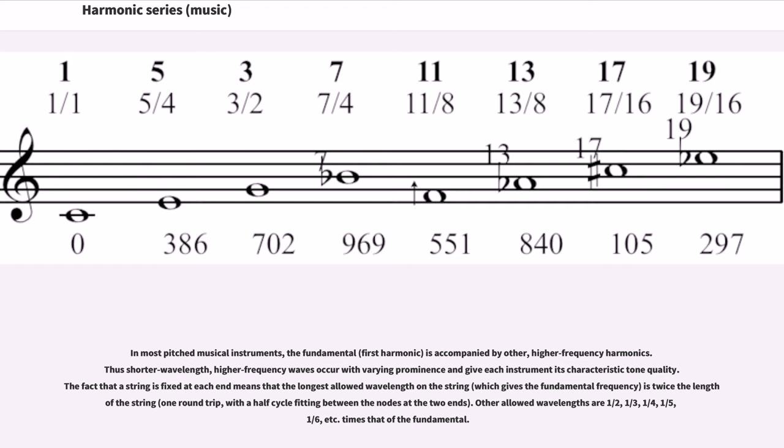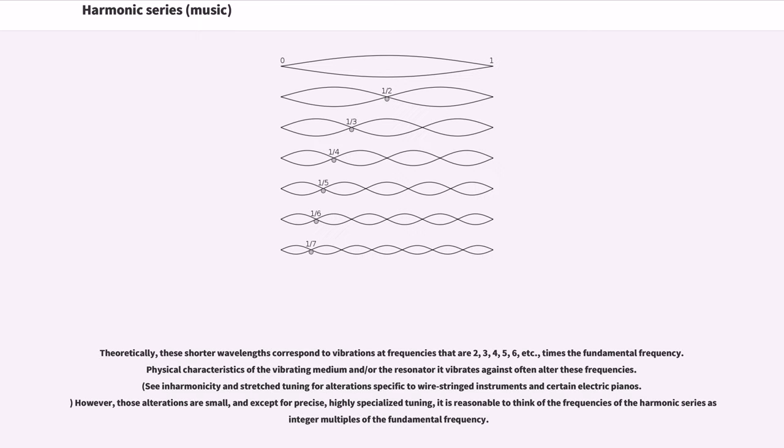In most pitched musical instruments, the fundamental, first harmonic, is accompanied by other higher frequency harmonics, thus shorter wavelength, higher frequency waves, which occur with varying prominence and give each instrument its characteristic tone quality. The fact that a string is fixed at each end means that the longest allowed wavelength on the string, which gives the fundamental frequency, is twice the length of the string, one round trip with a half cycle fitting between the nodes at the two ends. Other allowed wavelengths are half, one-third, one-quarter, one-fifth, one-sixth, etc. times that of the fundamental.